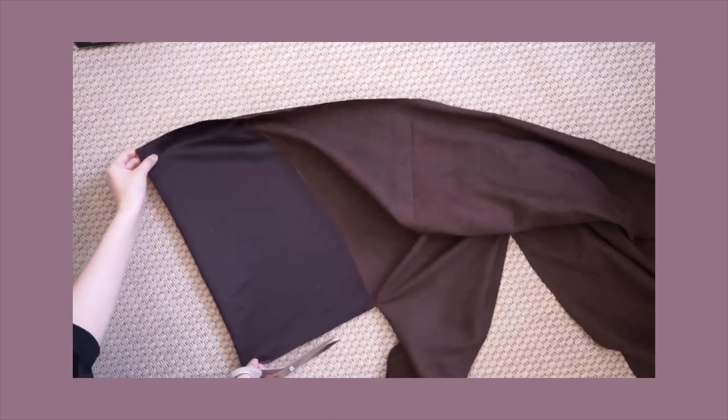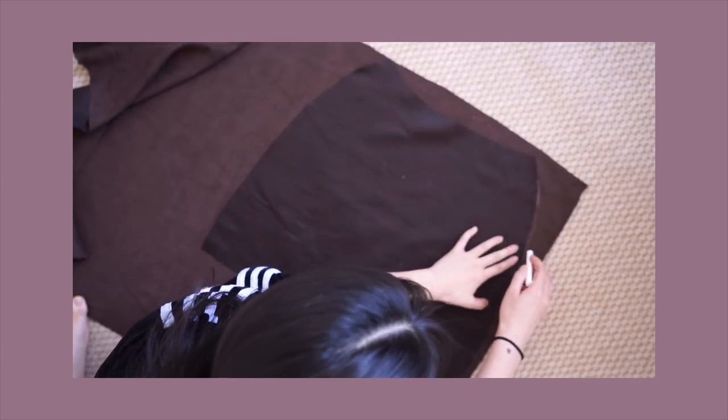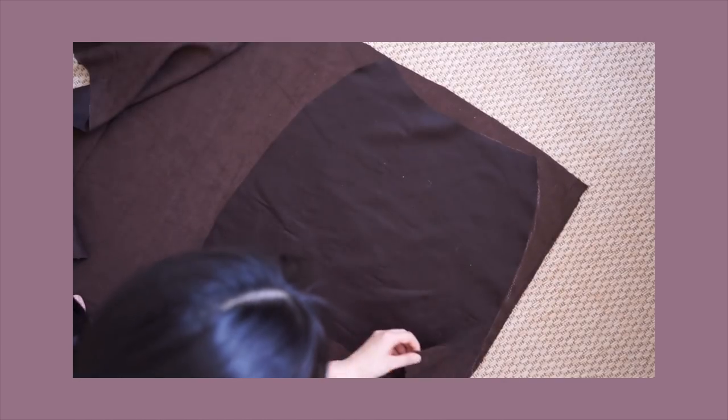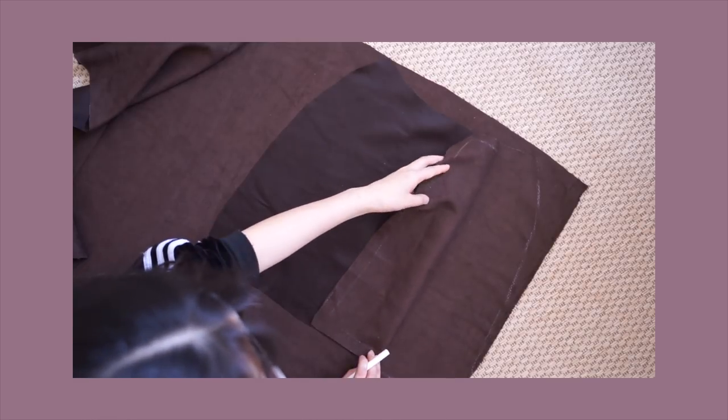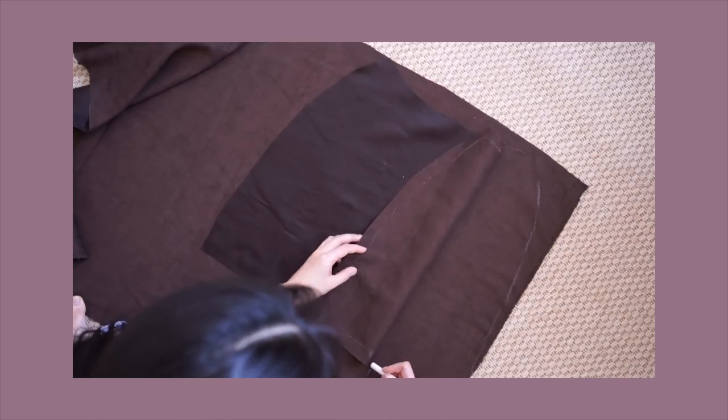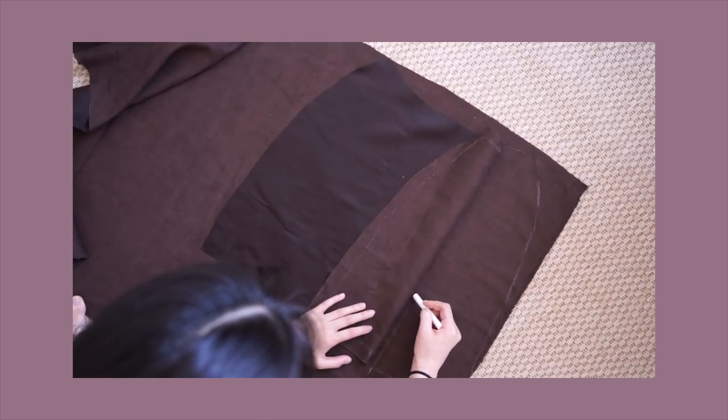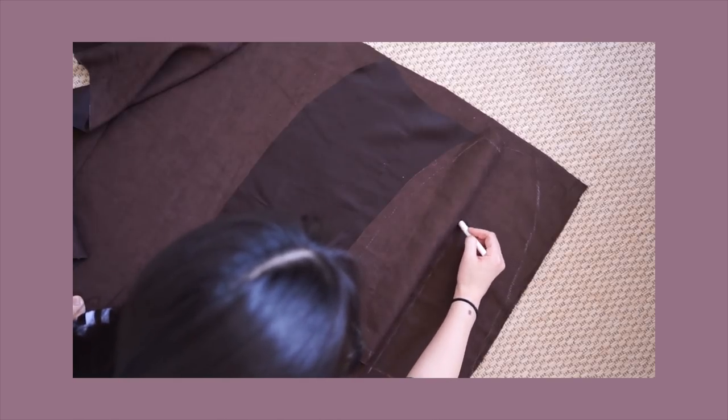Now I'm cutting the front piece. Obviously you guys already know what is so special about this skirt - it has this really cute metal loop detail at the front. So now I'm creating this by separating the front piece into two pieces.